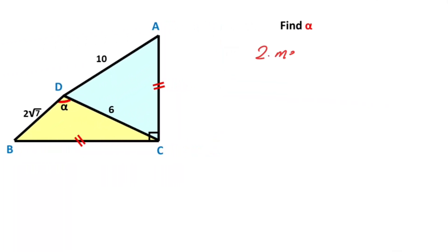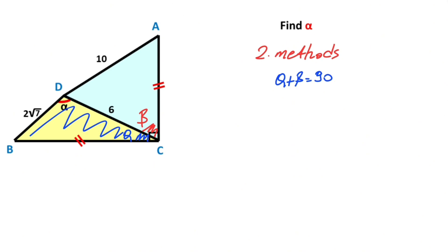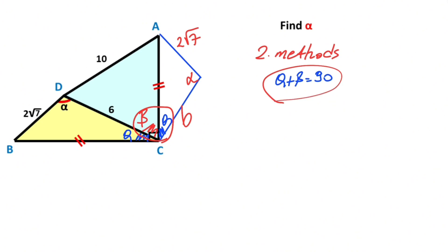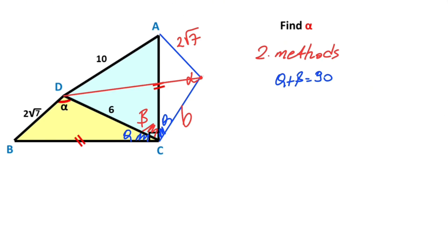This was the first method. Now we will calculate the value of alpha using a second method. This time, let's call here theta and here beta — alpha plus beta equals 90 degrees. After that, if you move this triangle outside of the quadrilateral like this, here is theta, here is alpha, this length is 2 root 7, and here is 6 units. So this triangle and that triangle are congruent. Next step, theta plus beta equals 90 degrees, so if we connect these two corners, let's call here point P.